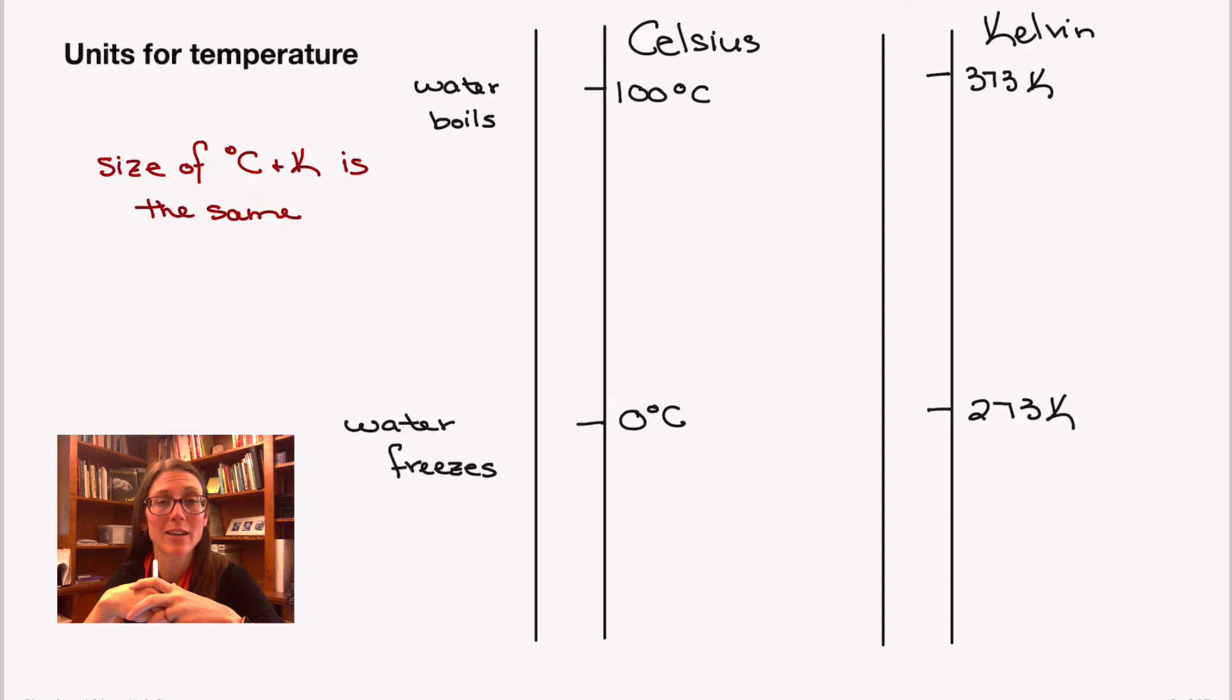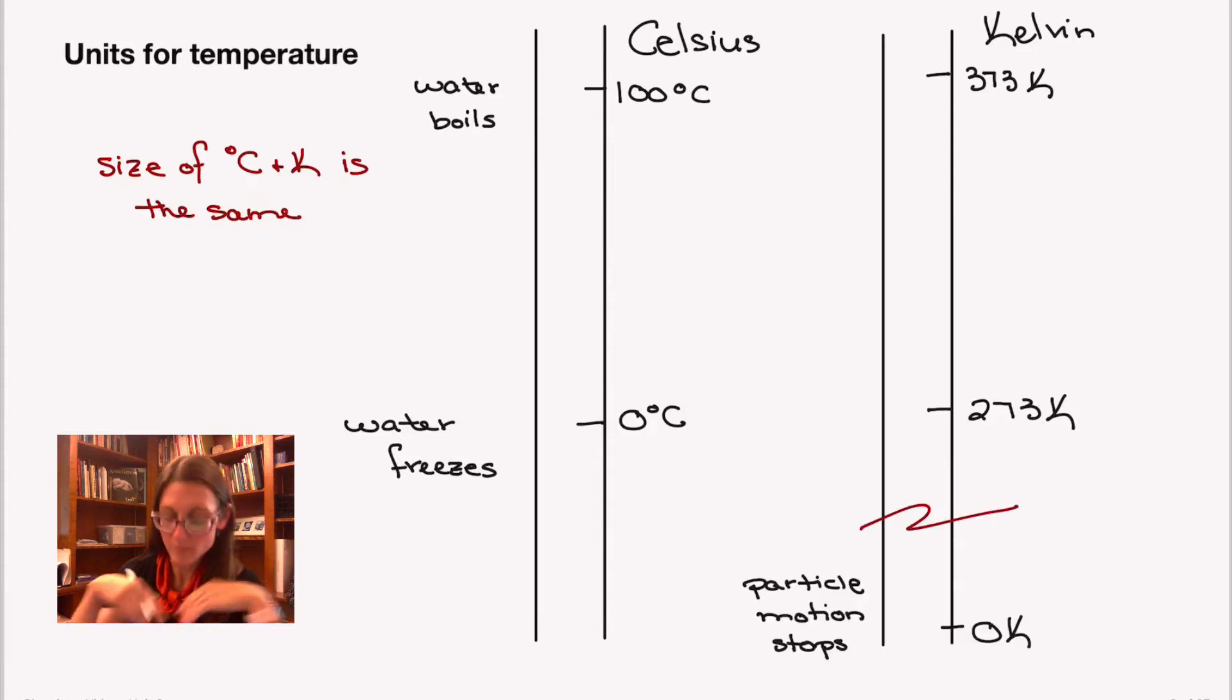The slowest a particle can get is not moving at all. And that's what zero Kelvin corresponds to. At zero Kelvin, the particles stop moving. So particle motion stops at zero Kelvin.